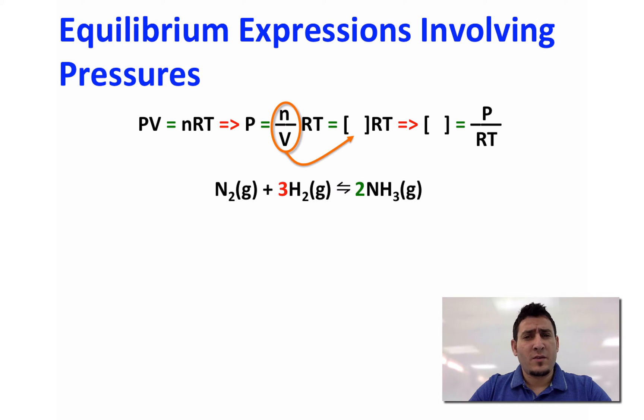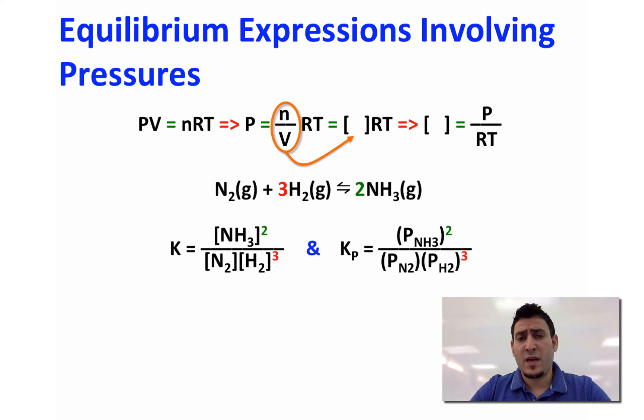Considering again the reaction of Haber process, and looking at the expression of K, or sometimes we can see it as Kc, and Kp, which is the equilibrium constant involving the use of pressures, so we can see that Kp is equal to the pressure of NH3 to the power 2 divided by the pressure of N2 multiplied by the pressure of H2 to the power 3.